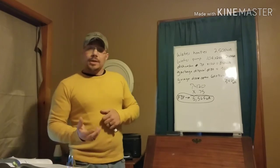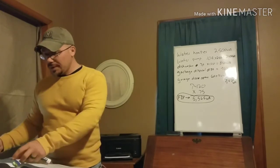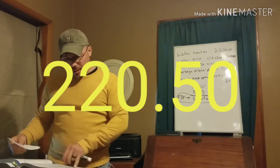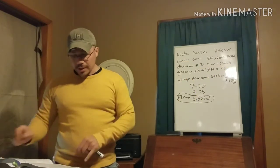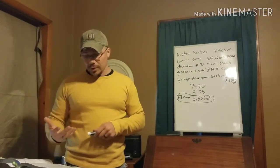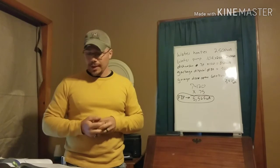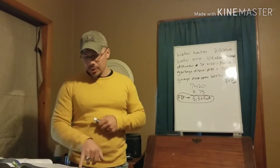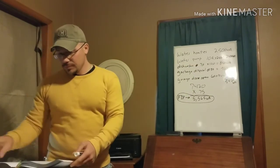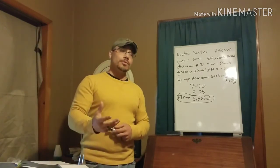The last thing in this video is our motor load. Turn to section 220.50. Section 220.50 says motor load shall be calculated in accordance with 430.24, 430.25, 430.26, and with Article 440 for hermetic refrigerant motor compressors. We're going to look at 430.24, which is the one that really applies to us in service calculations for residences.